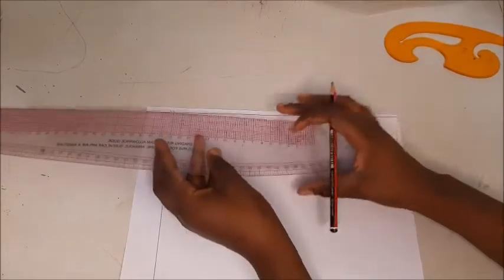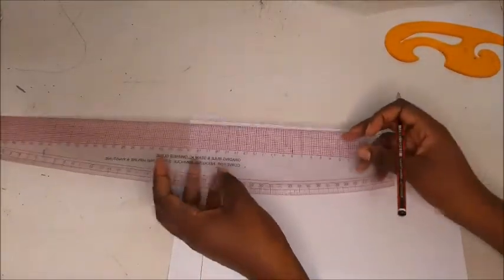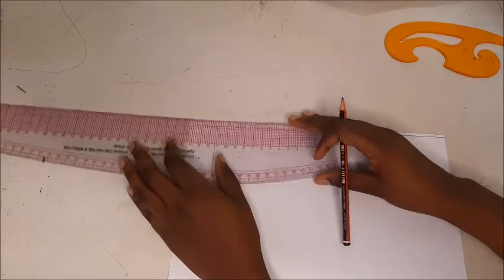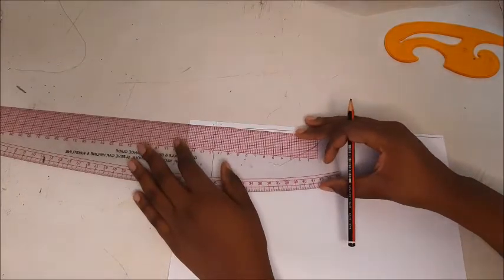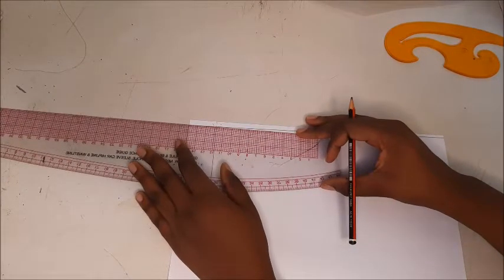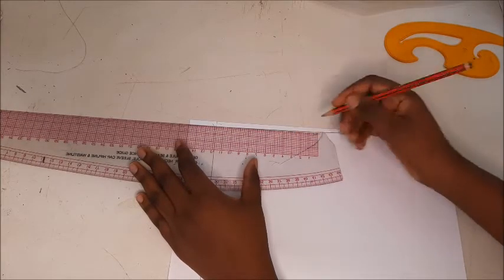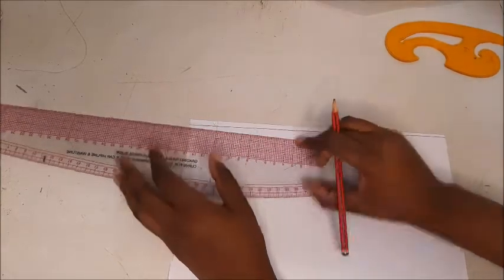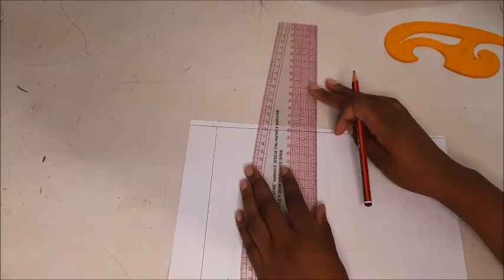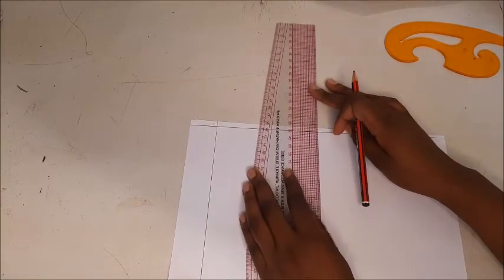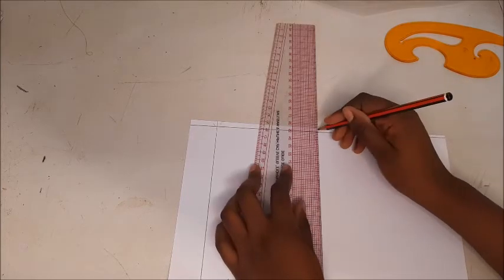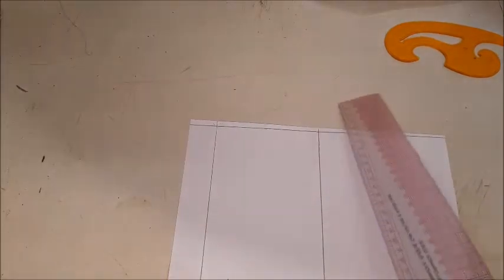Next, take half of your hip measurement and add 1.5 centimeters to mark point two from one. Your hip measurement is 94 centimeters divided by two is equal to 47 and add 1.5 centimeters, which is 48 centimeters. Sorry, 48.5 centimeters. And at point two, you're going to square down. This is going to be your center front.